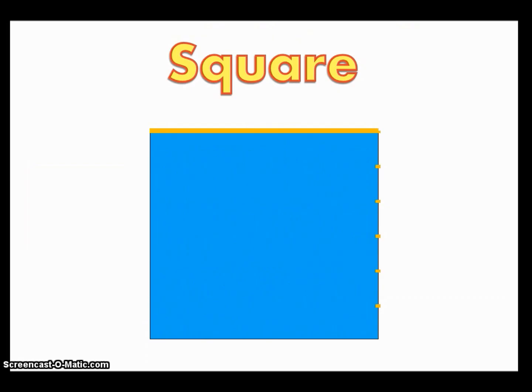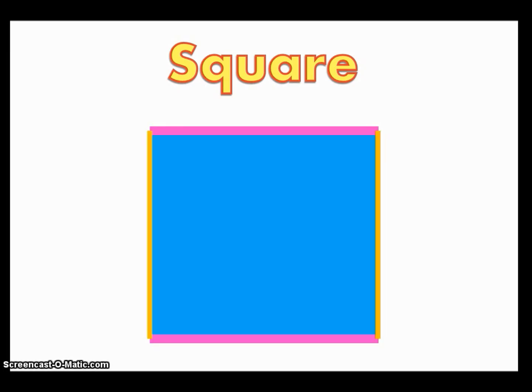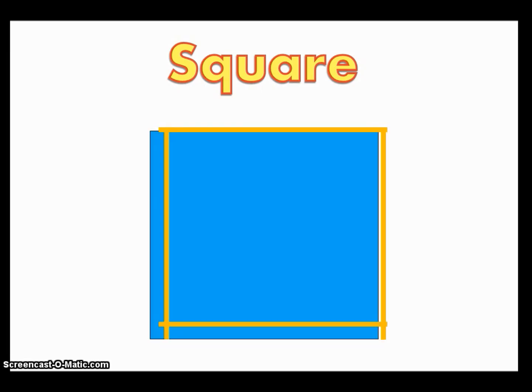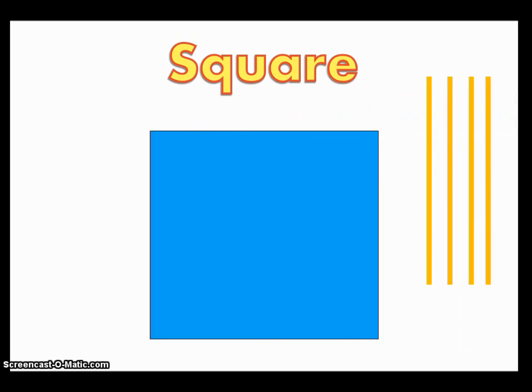So our first quadrilateral is a square. One, two, three, four sides, making it a quadrilateral. Then two different sets, right here and right here, of the sides are parallel lines. Also, if we were to take off the sides and put them side by side, they would all be exactly equal. Finally, squares have four angles and every single angle is a right angle, making that L shape in the corner.